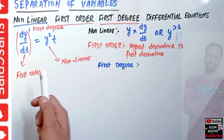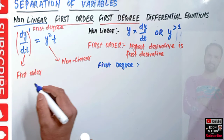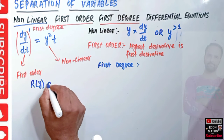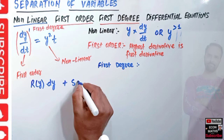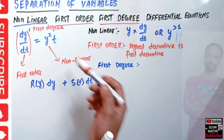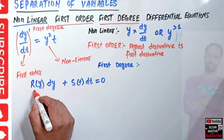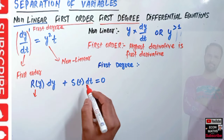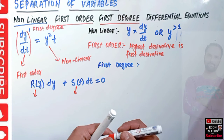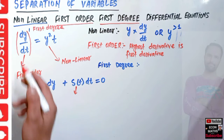If the equation can be written in the form R(y)·dy + S(t)·dt = 0, where R is a function of y alone and S is a function of t alone, then the solution can be obtained simply by ordinary integration.